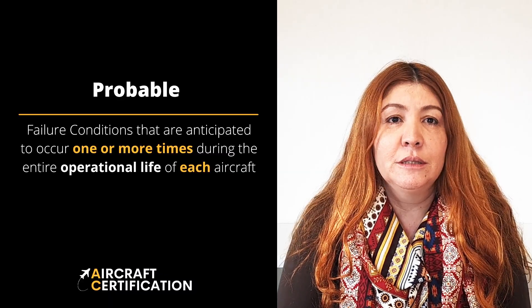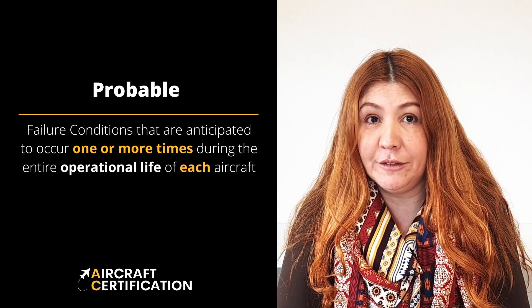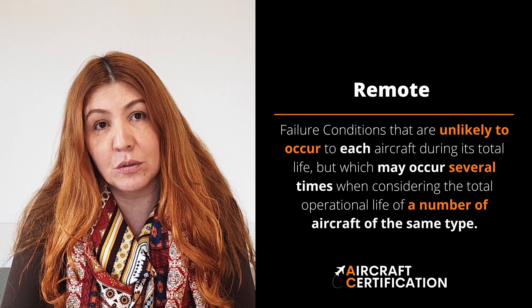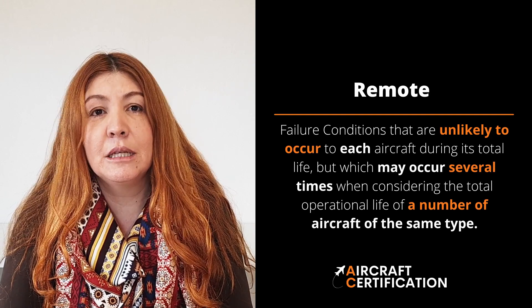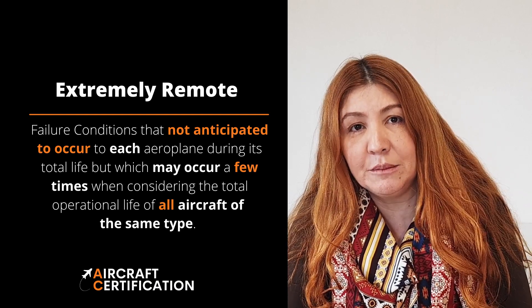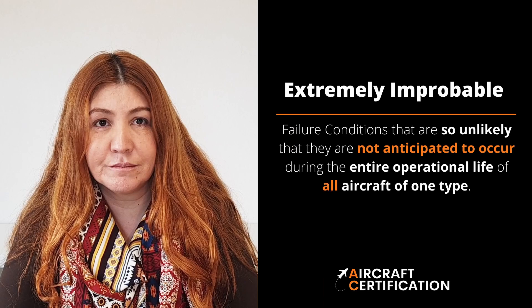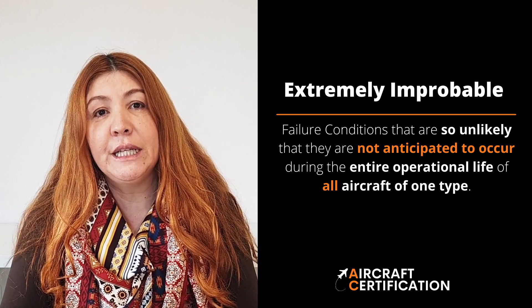So when we talk about risk, we are talking about severity and likelihood of occurrence. We've just talked about severity, so let's talk now about the likelihood or probability of occurrence. First, we have the probable failure condition — those that are expected to occur in each airplane along its operational life. After that, we have the remote failure condition, which are not anticipated to occur in each airplane but may happen several times in some airplanes of a fleet. The extremely remote failure conditions are those not anticipated to occur either, but can happen a few times when we measure the whole fleet's operational life. And the extremely improbable ones are those unlikely to occur across the whole fleet of the same type.